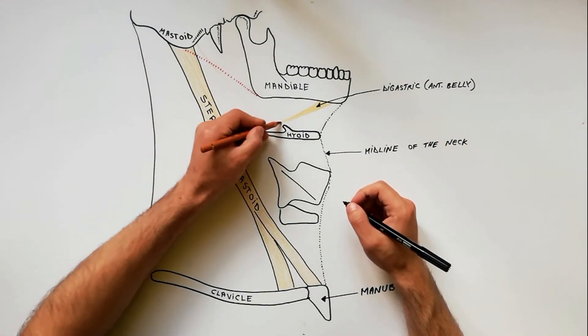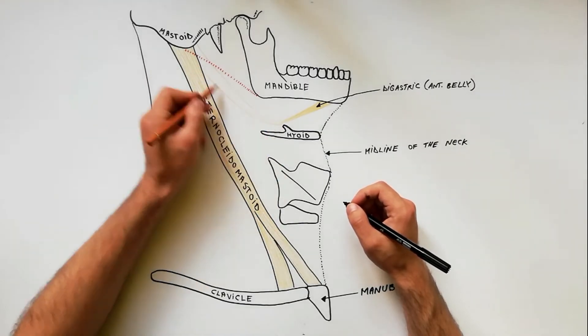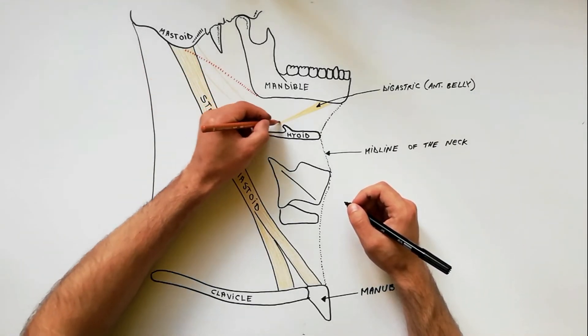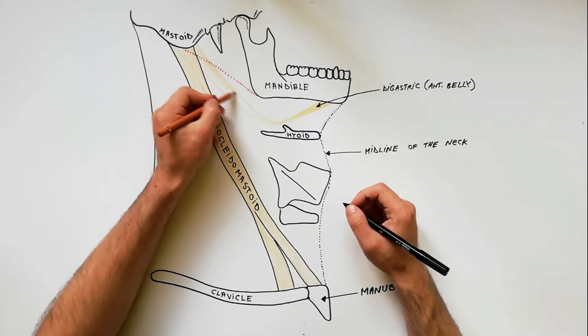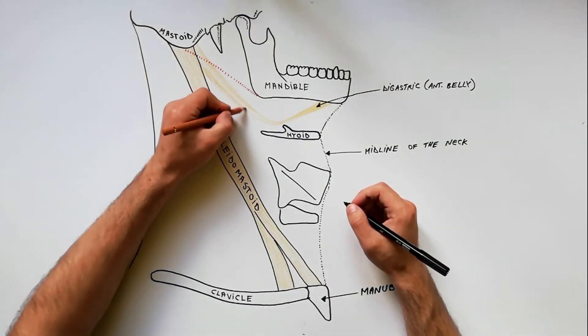The posterior belly arises from the mastoid notch which is on the inferior surface of the skull, just medial to the mastoid process.